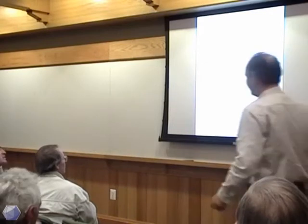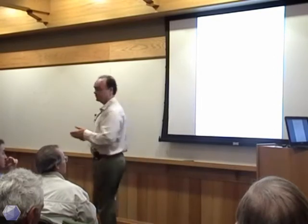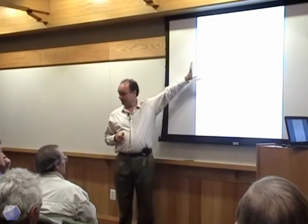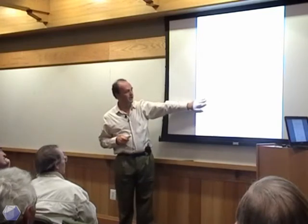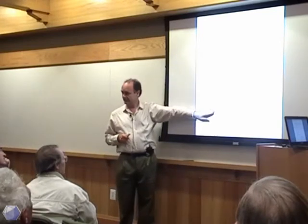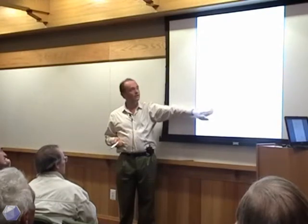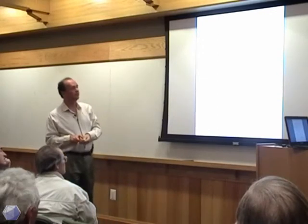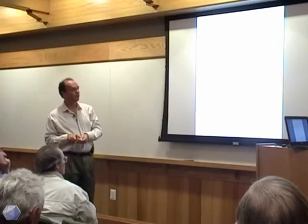Here's the proof. Suppose that two of those primes were the same — in other words, xi and xj had the same prime factor. Then that prime would divide the greatest common divisor of xi and xj, which is one — a contradiction.